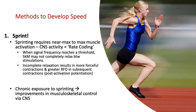Firstly, no exercise improves running velocity more than maximal velocity sprinting — you have to sprint to be fast. When sprinting, we perform near-max to max muscle activation, which is a central nervous system activity called rate coding. With multiple repetitions of max to near-max sprinting, when signal frequency reaches a threshold, those signals summate. There is incomplete relaxation between stimulations, resulting in a more forceful contraction, greater rate of force development, and subsequent contractions. This is also known as post-activation potentiation.